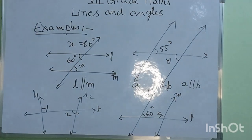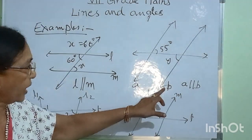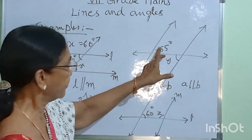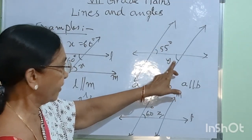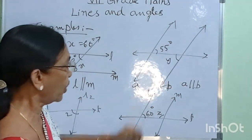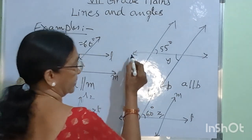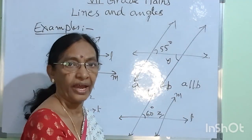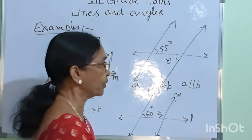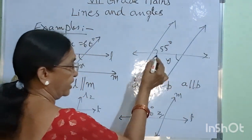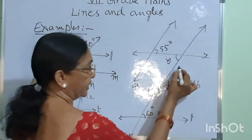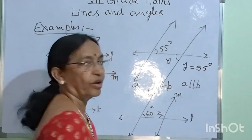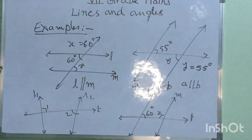Next, here A and B are two parallel lines. A is parallel to B. This angle is 55 degrees and this is angle Y. These two are also alternate interior angles because this is a transversal. These two are interior angles and they are on opposite sides. Therefore, these two are alternate interior angles. Therefore, alternate interior angles are equal, so Y is equal to 55 degrees.